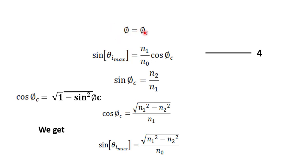When phi equals phi c, theta i equals theta i maximum. So sin(theta i maximum) = (N1 / N0) × cos(phi c). This is equation number four. Since sin(phi c) = N2 / N1, we calculate cos(phi c) = √(1 − sin²(phi c)), which gives cos(phi c) = √(N1² − N2²) / N1.